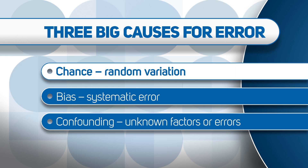Chance — by that I mean random variation. You can flip a penny ten times over and over again, and one of those times you'll get ten heads. In other words, sometimes chance alone produces results far away from normal or what might be expected. It just happens.